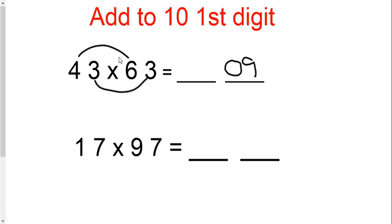Then, you're going to multiply four times six, but you're going to add to that answer the number that they have in common. So, four times six is twenty-four, plus the three is twenty-seven. Don't forget to add three to the answer. Two thousand seven hundred and nine is your answer.